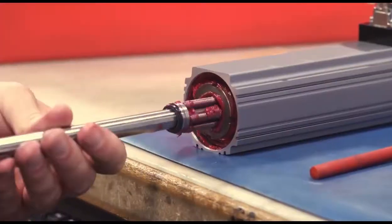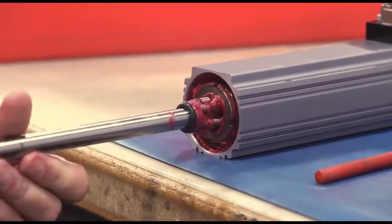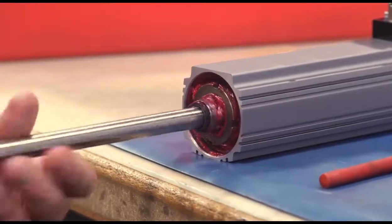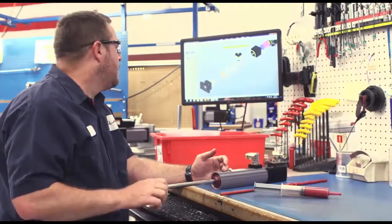Our patented inverted roller screw design allows the motor to be built into the body of the actuator, minimizing the overall package size of the mechanism.